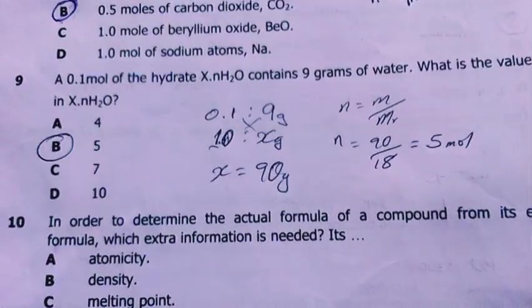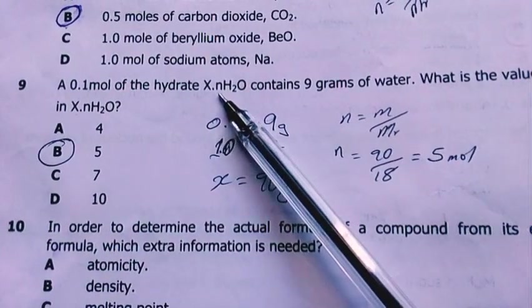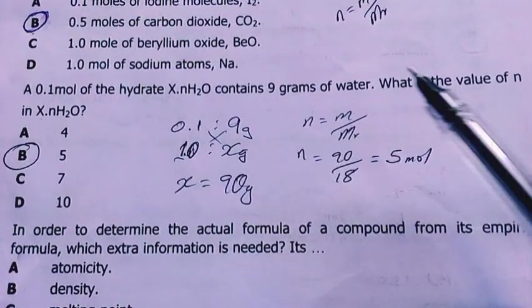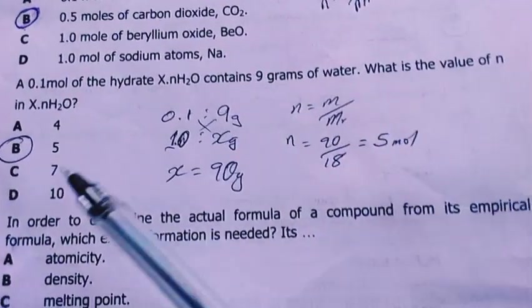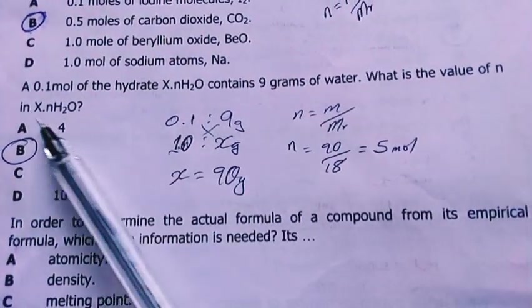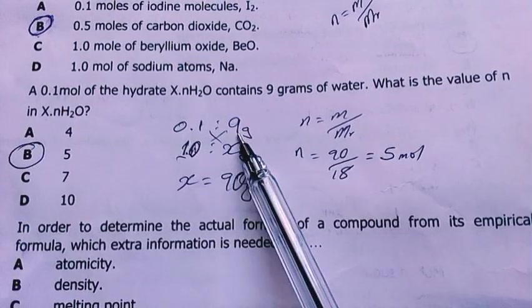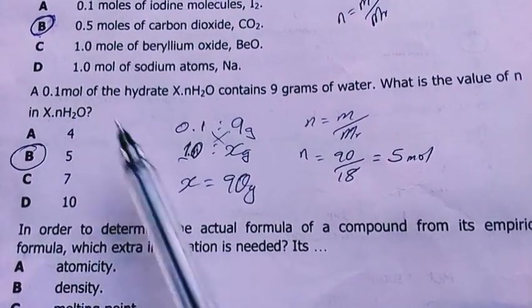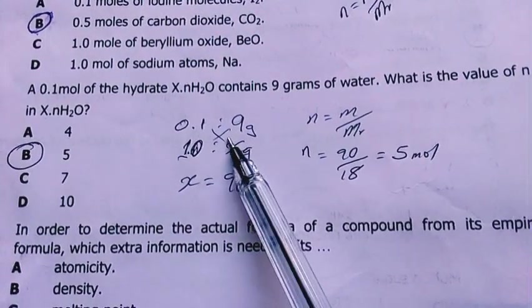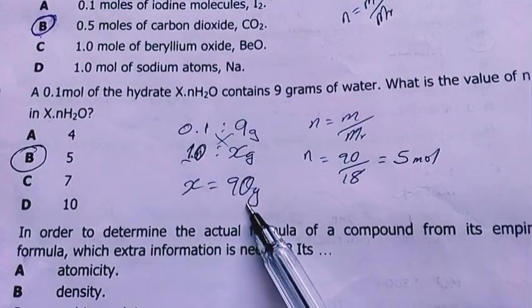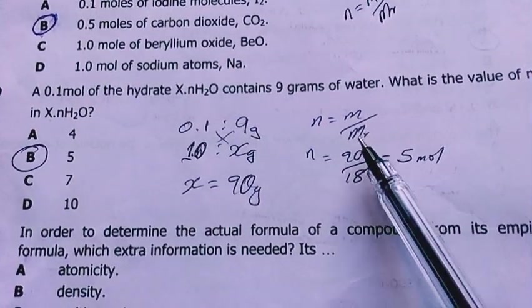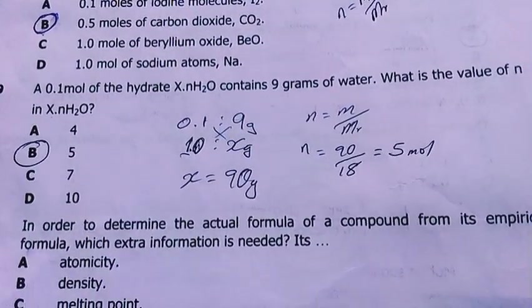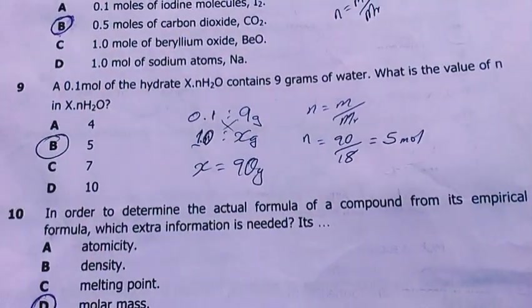Number nine. 0.1 moles of the hydrate X·nH2O contains 9 grams of water. What is the value of n in this formula? They've told me it's 0.1, so 0.1 contains 9 grams. Therefore 1.0 should contain X grams. In one mole, because this formula represents one mole, we're going to have X grams. After I did my cross multiplication, it gave me 90 grams. So I divide 90 grams by the molar mass of water, which is 18. My answer comes out as 5.